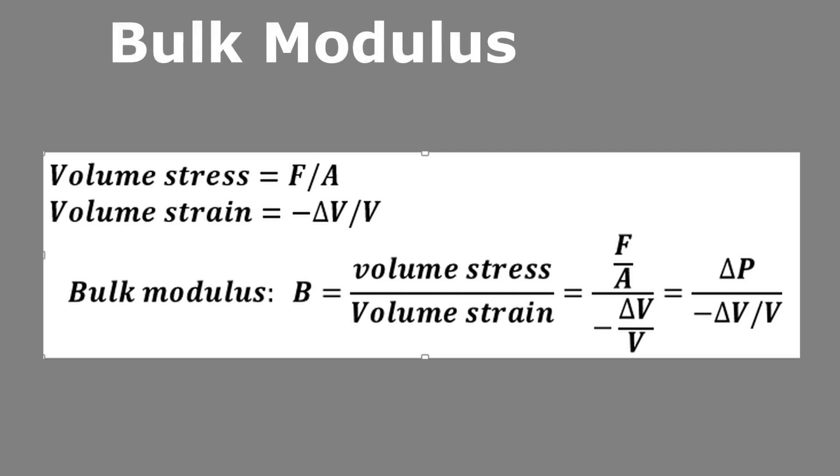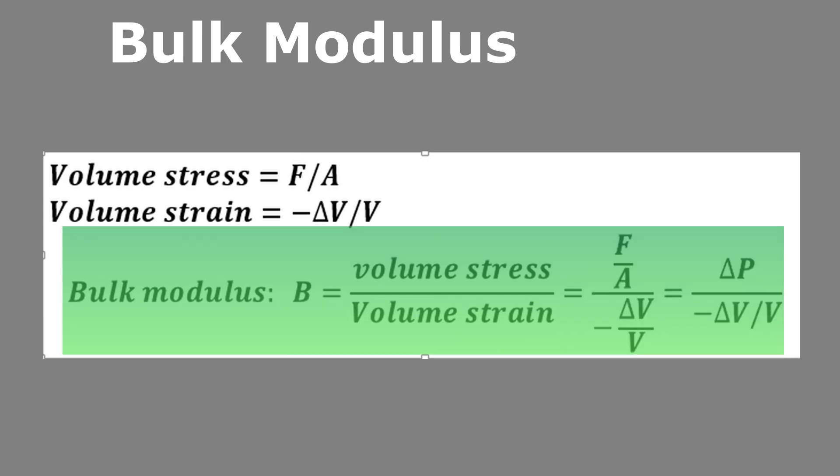By taking the ratio between volume stress, which we calculated as force per unit area, and volume strain, which is the change in volume over original volume, we get the bulk modulus. Bulk modulus B equals volume stress divided by volume strain, which equals (F/A) / (-ΔV/V).